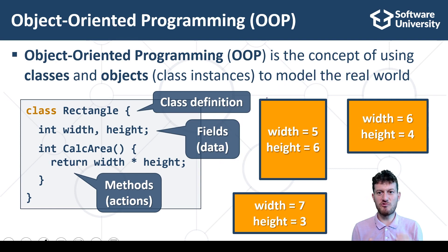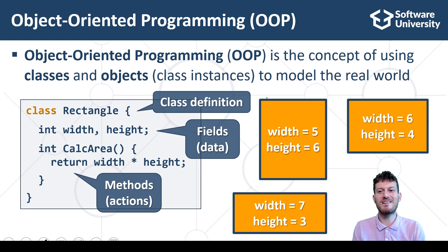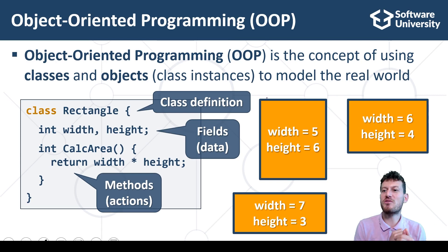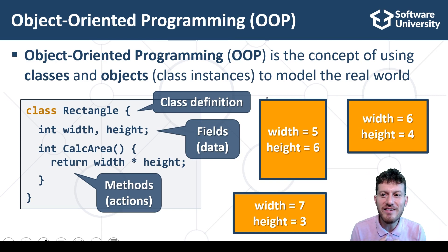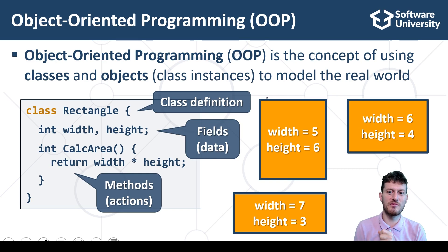Classes and objects are the building blocks of object-oriented programming. They come together with some other OOP concepts like abstraction, interfaces, data encapsulation, inheritance, polymorphism, and exception handling.